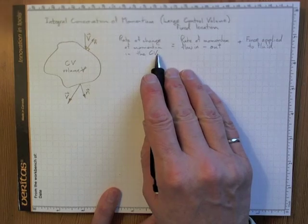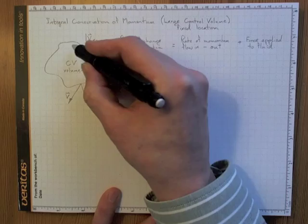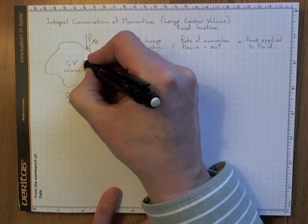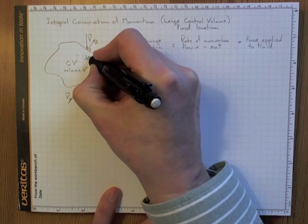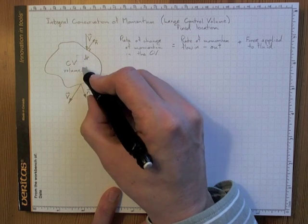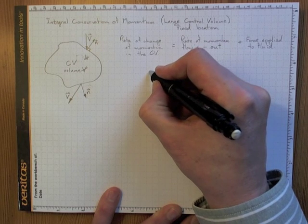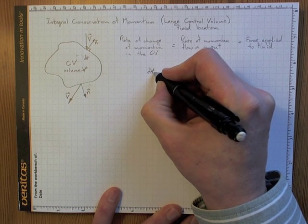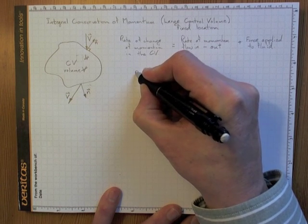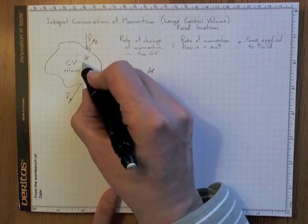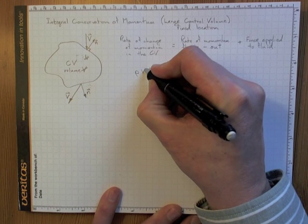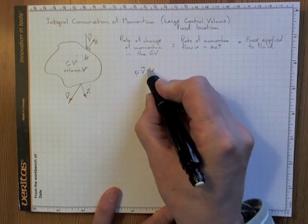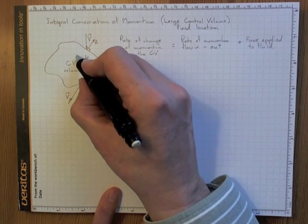For the rate of change of momentum in the CV, we look at the total momentum in the control volume. For a small chunk with volume dV, the momentum in that chunk is dV times the density — giving us the mass of that chunk — times the vector velocity it's moving at. That gives us the momentum for that little chunk of volume.